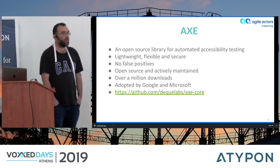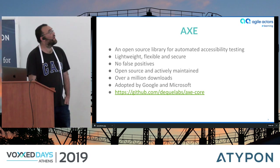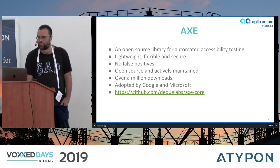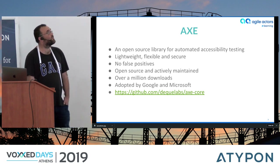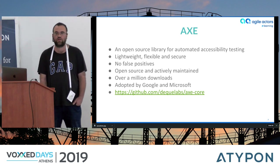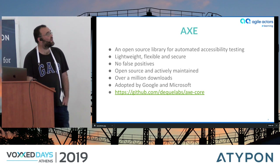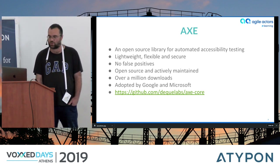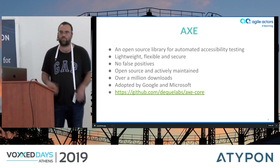For tooling, we found the Axe library, which is an open source library for automated accessibility testing. It is lightweight, flexible, and secure. It has no false positives, is actively maintained by the community, has about a million downloads, and has been adopted by Google and Microsoft. The link shown here lets you download it and play around with it.